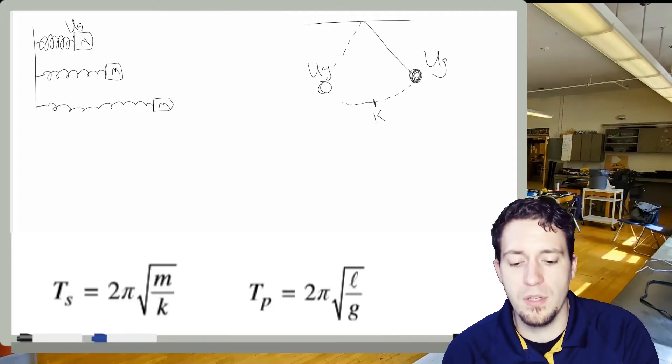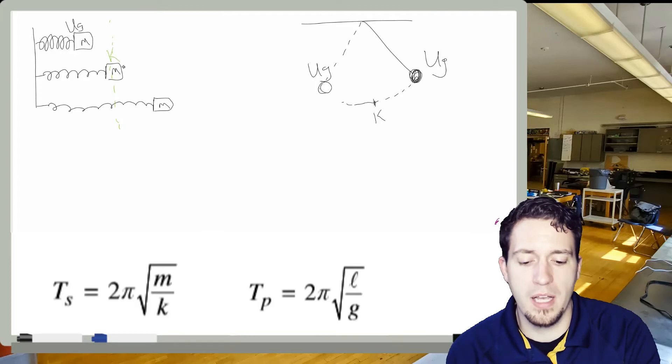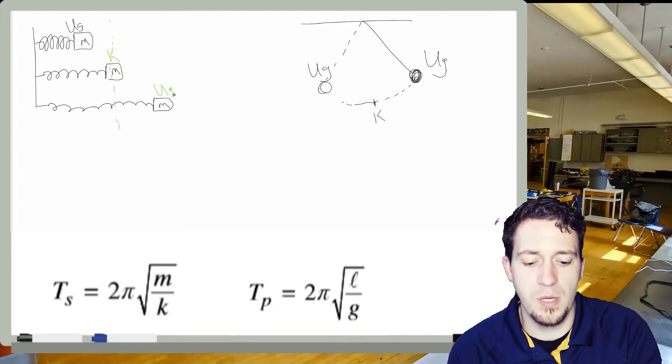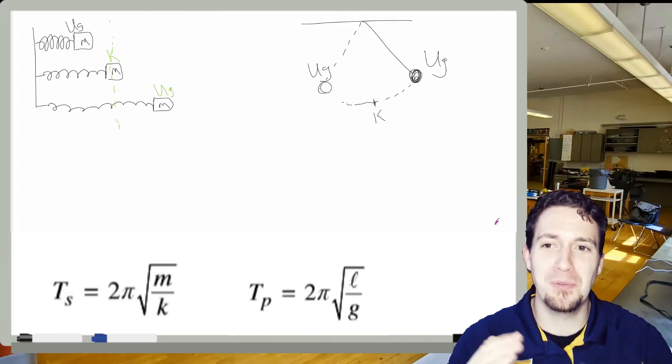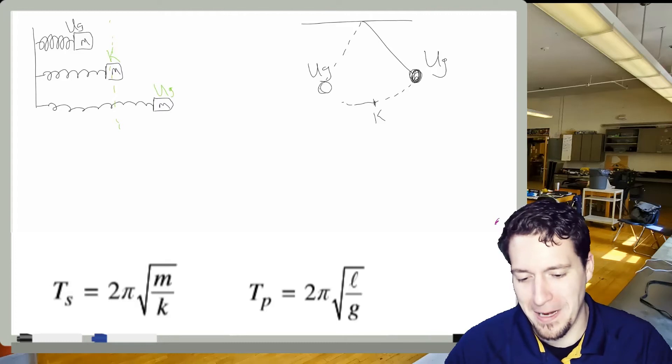And then here, so this is our equilibrium position. Here it would be all kinetic energy. And then finally, when it gets out here, it would be back to being spring potential. So we're getting that oscillation between spring potential and kinetic energy.